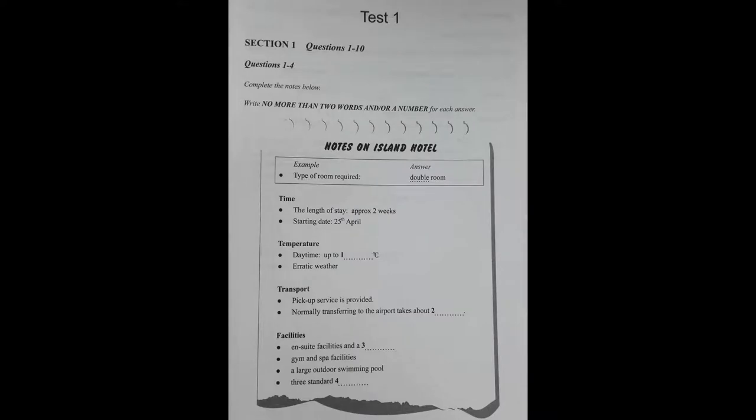Test 1. You will hear a number of different recordings and you will have to answer questions on what you hear. There will be time for you to read the instructions and questions and you will have a chance to check your work. All the recordings will be played once only. The test is in four sections. At the end of the test, you will be given ten minutes to transfer your answers to an answer sheet.